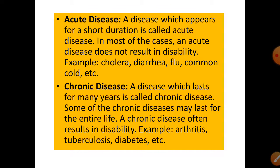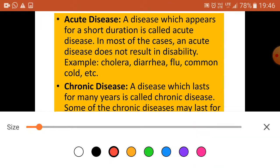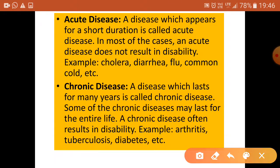In this chapter we will study about the difference between acute and chronic diseases. Acute diseases appear for a shorter duration of time and they do not cause any disability as such. Examples include cholera, diarrhea, flu, and common cold.